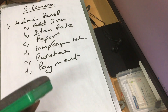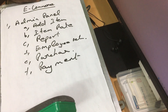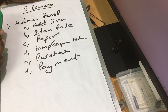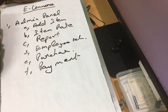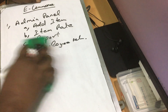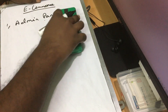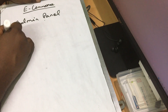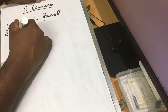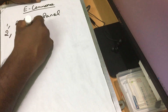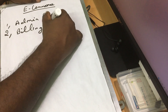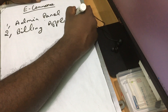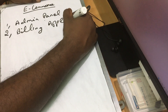So this is the admin panel. All rights are managed here — who is in charge and what their role is. This is the admin panel. Next is Billing. If you want to use the billing application and go to the shop, you can go to the bill.